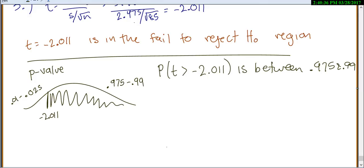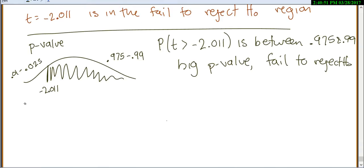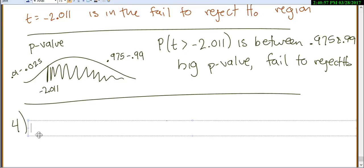So my p-value is between .975 and .99. That's huge, right? And so this is a big p-value, and we will fail to reject the null. So number four, what was our actual conclusion? So both times we failed to reject, and so that means we don't actually have enough evidence for the alternative.